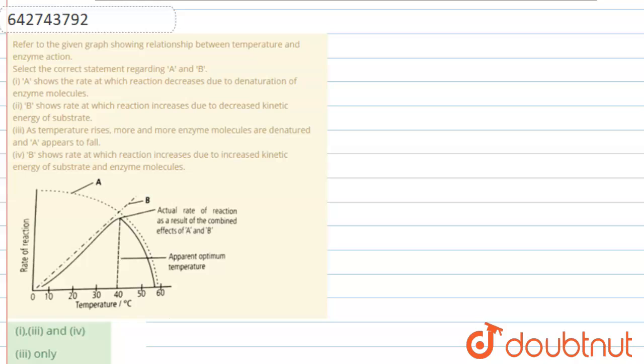Let us see the graph. The graph shows the relationship between increasing temperature and its effect on the rate of reaction. We can see two plots on the graph, plot A and plot B, and we have to choose the correct statement regarding A and B.